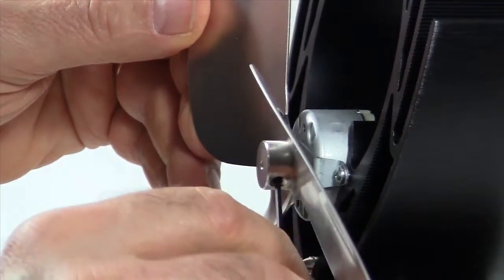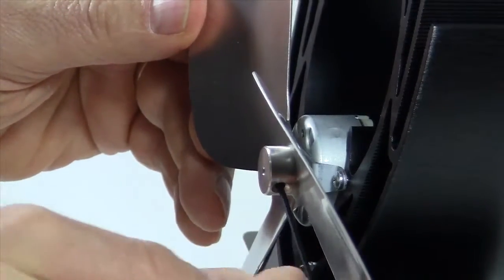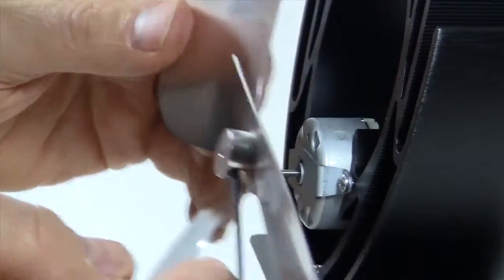Turn it counter clockwise to loosen the set screw. And now the blade simply slides off the shaft.